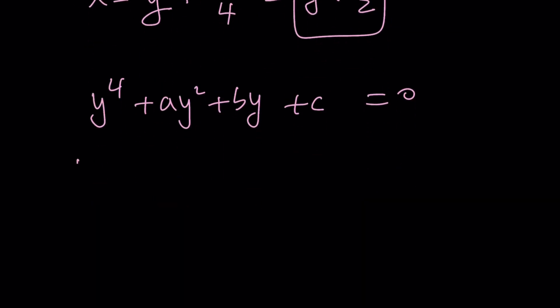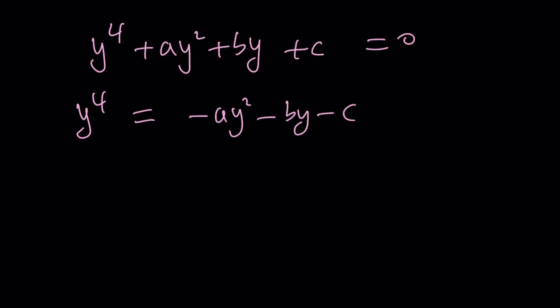And then, you can go ahead and put everything besides y to the 4th on the other side. I could also make these minus, but that's okay. And then, we add something to both sides to make the left-hand side a perfect square at the same time making the right-hand side a perfect square, which gives us a cubic equation at the end.